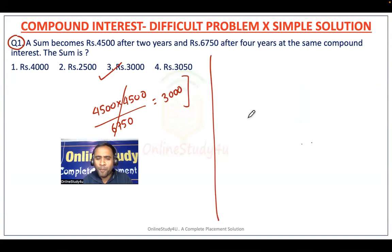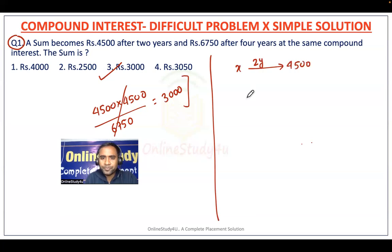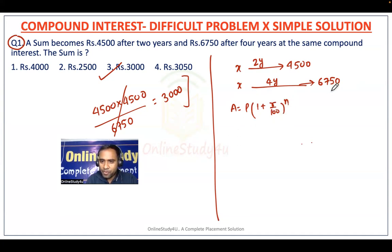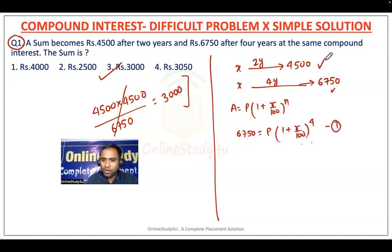Before that, let us look at the normal process. Suppose your sum is X. So it becomes 4500 in two years, and the same sum becomes 6750 rupees in four years. We have to find the sum. We use the formula of compound interest: Amount = Principal × (1 + r/100)^n. So for four years: 6750 = P × (1 + r/100)^4. This is equation one. Similarly, for two years: 4500 = P × (1 + r/100)^2. This is equation two.